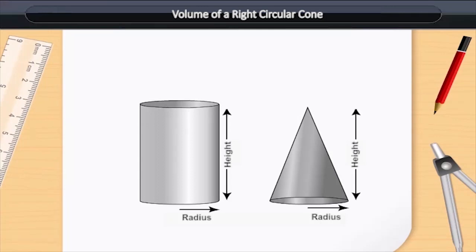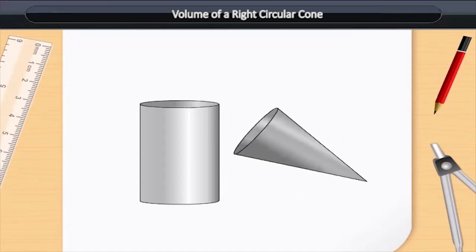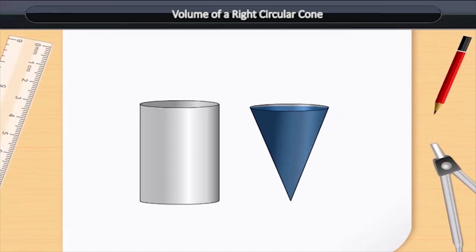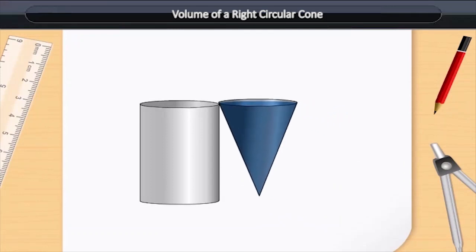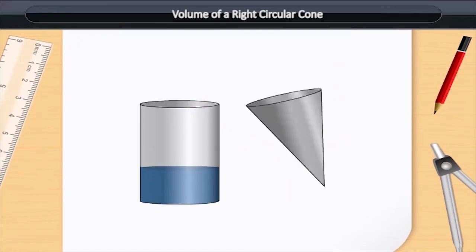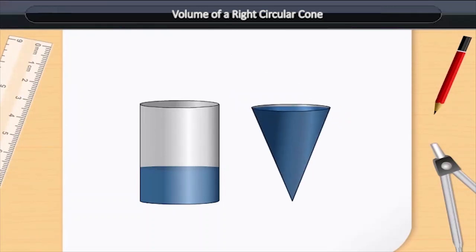Then we can try out an experiment that will help us to see practically what the volume of a right circular cone would be. Fill the cone up to the brim with sand once and empty it into the cylinder. We find that it fills only a part of the cylinder.